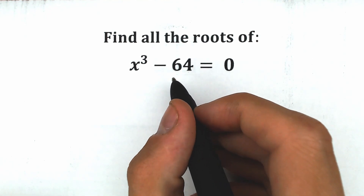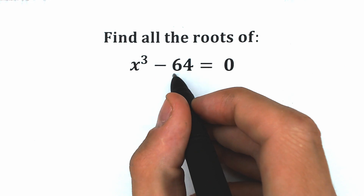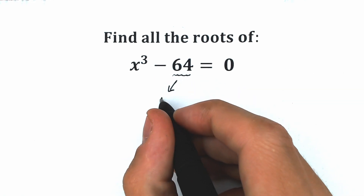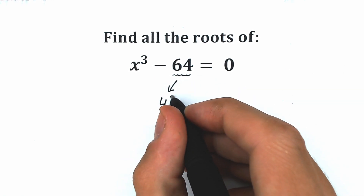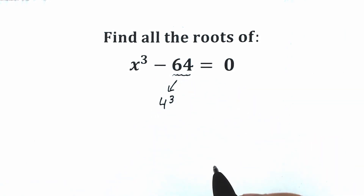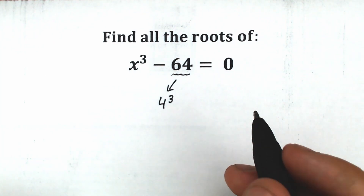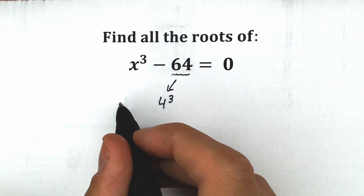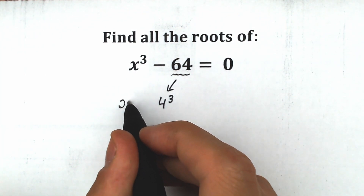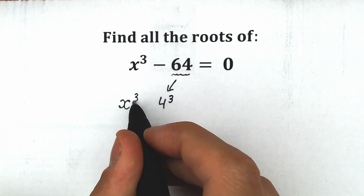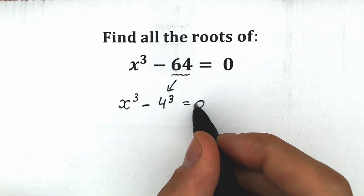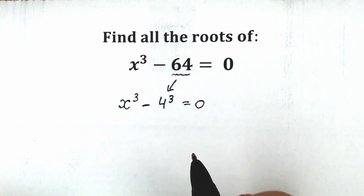So first of all, how can we do this? Let's rewrite 64 as 4 cubed, because 64 equals 4 times 4 times 4. So now we have x cubed minus 4 cubed equal to zero.